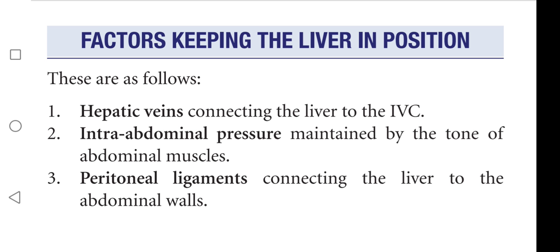The factors that keep the liver in position are as follows: hepatic veins, intra-abdominal pressure, and peritoneal ligaments. Hepatic veins connect the liver to the inferior vena cava. Intra-abdominal pressure is maintained by the tone of the abdominal muscles.